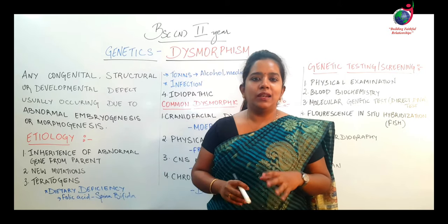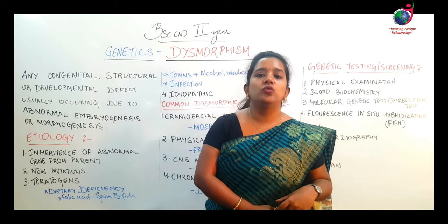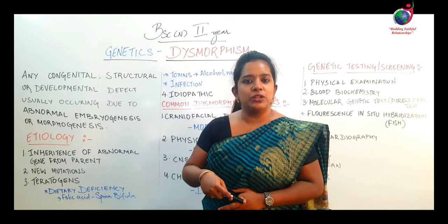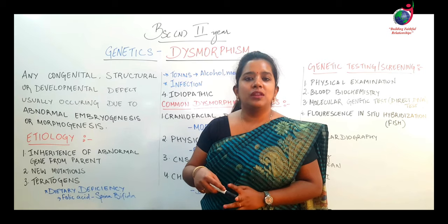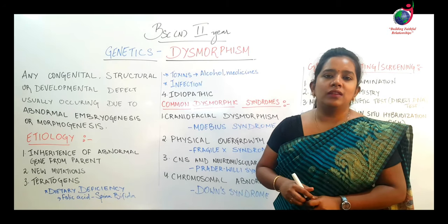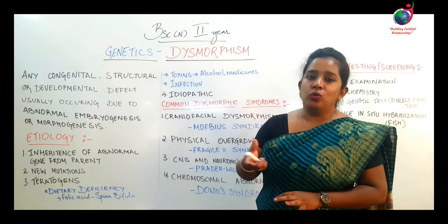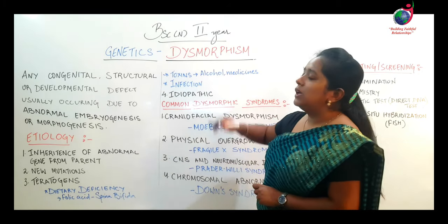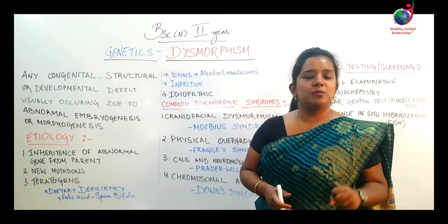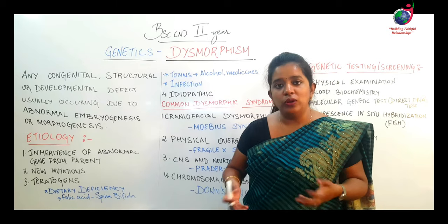The next cause is teratogens. Teratogens means any factor that can cause mutation or dysmorphism. For example, mother's dietary deficiency — like if the mother did not take folic acid properly, the risk of spina bifida in the baby increases. Or if the mother ingests toxins like alcohol, prescribed medications, or illegal drugs, that can happen. It could also be due to infections, basically sexually transmitted infections or TORCH infections. In many incidences the cause could be unknown — which we call idiopathic.